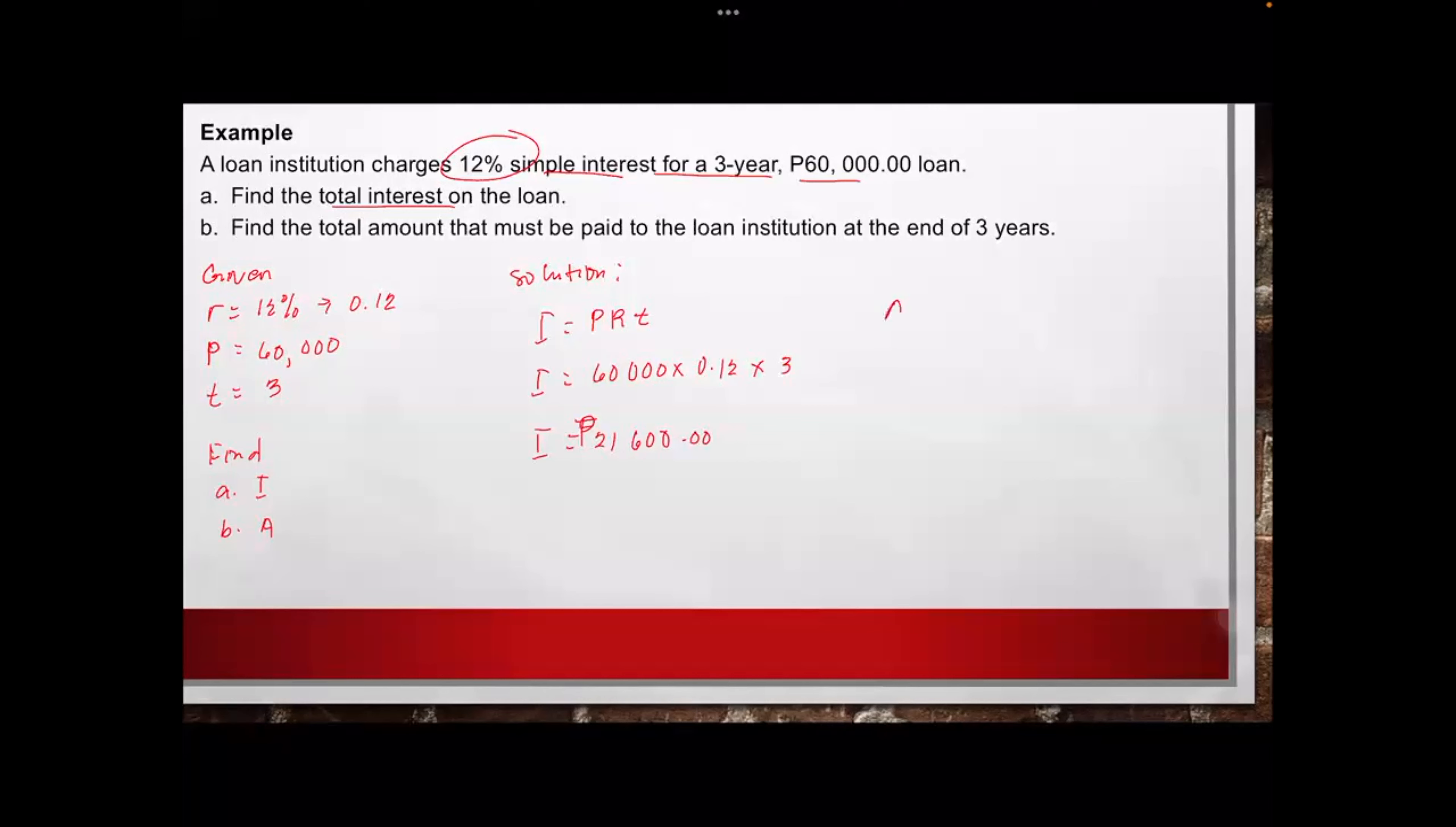Next, for letter B, we have to use A equals P plus I. So your A equals our principal is 60,000 plus the interest which is 21,600. So if we add them, we have 81,600 pesos. Question? Okay, I hope you got it.